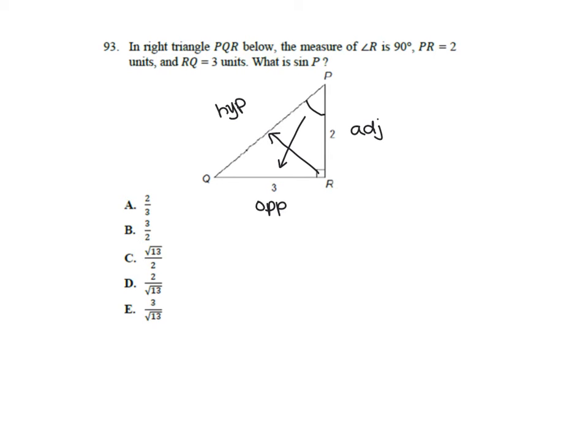To do sine, I need O over H, because remember, SOH-CAH-TOA. So I need opposite over hypotenuse. And if you look, I'm missing a length over here with hypotenuse. But since I have a right triangle, I can solve for it using Pythagorean theorem.